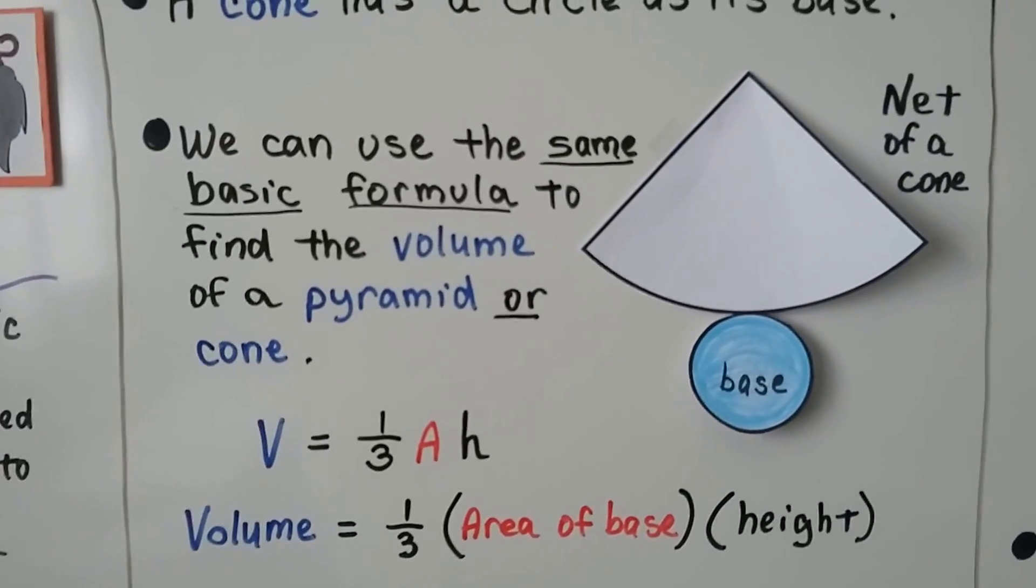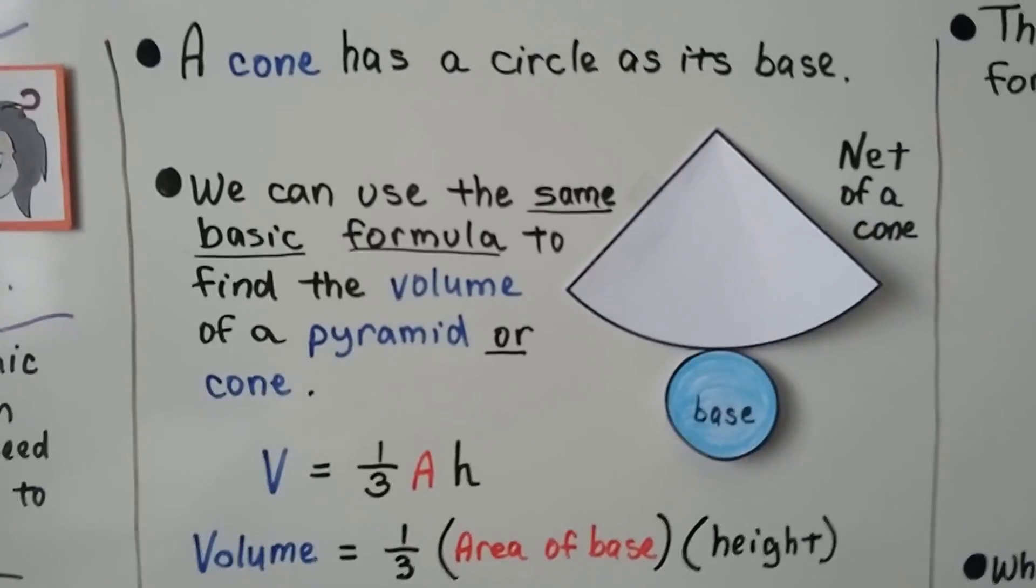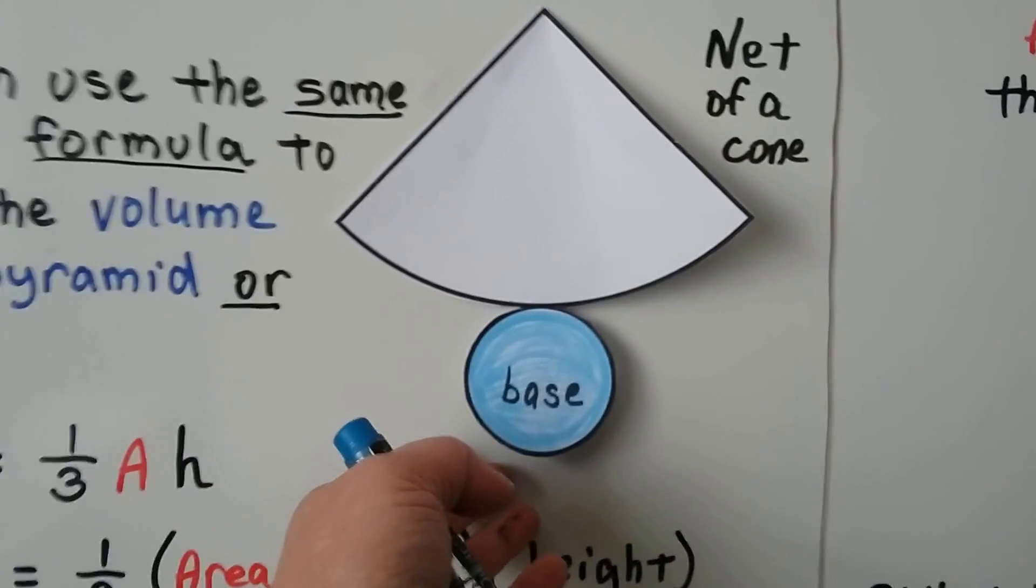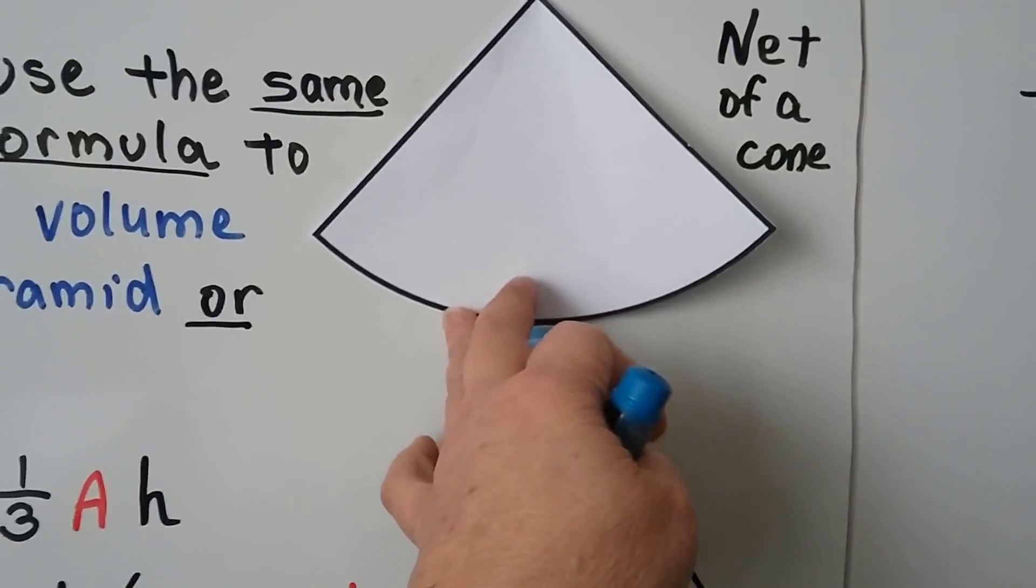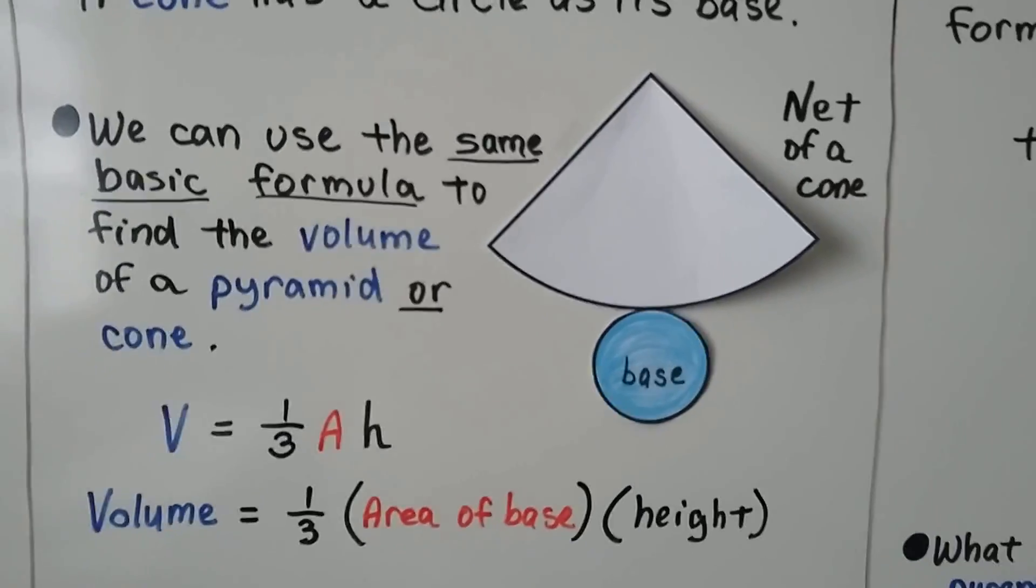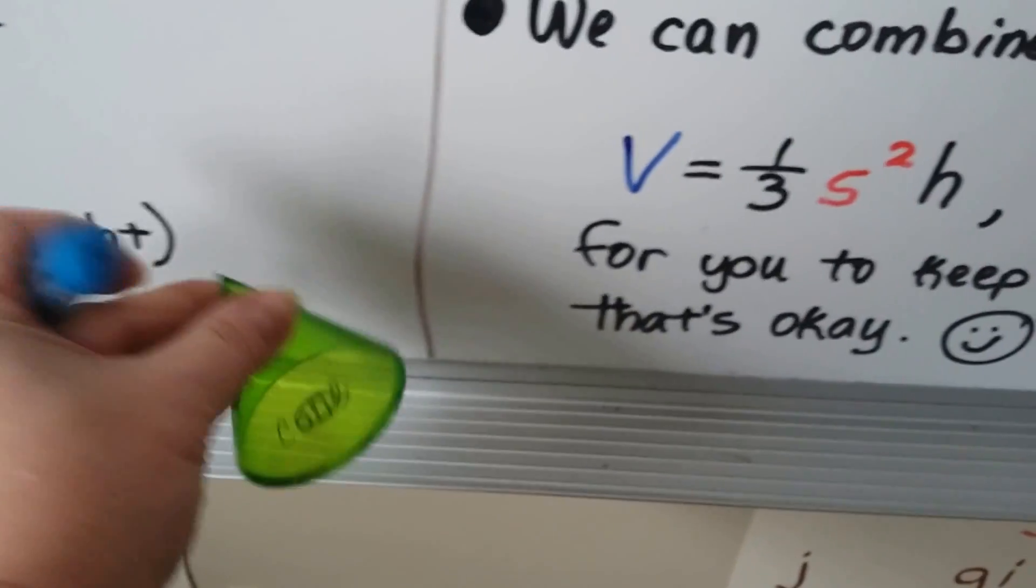A cone has a circle as its base. So, that's the net of a cone. This folds up, and these fold in, and it makes a cone. Here's the cone. You can see the circle base.